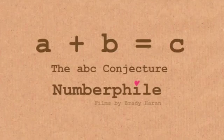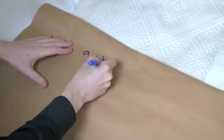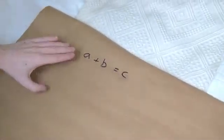So the ABC conjecture involves the most simple formula you can think of. It's this: A plus B equals C. Doesn't get much easier than that, and that's where it gets its name from.